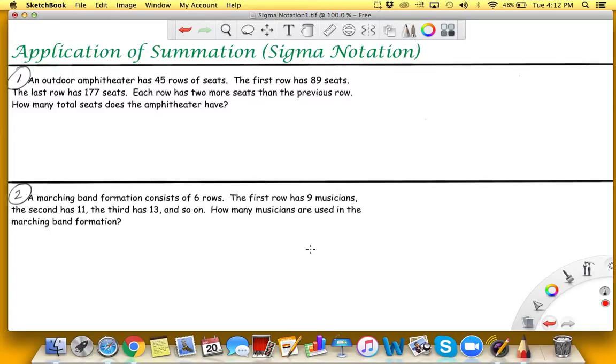An outdoor amphitheater has 45 rows of seats. The first row has 89 seats, the last row has 177 seats. Each row has two more seats than the previous row. How many total seats does the amphitheater have? If you notice there's a pattern - each row has two more seats than the previous row, so that's going to be our common difference.